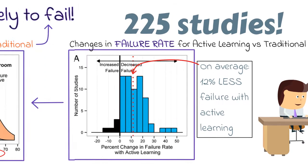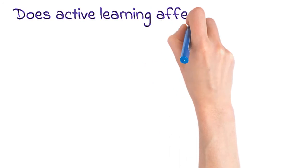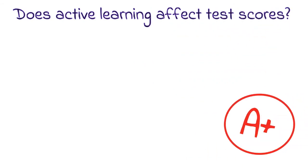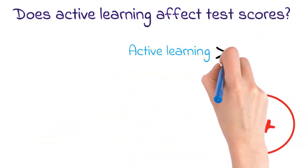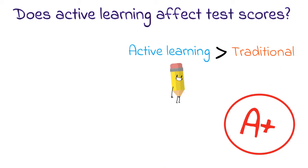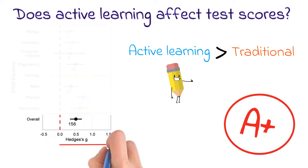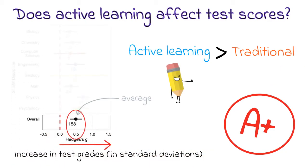They also reassessed the data to summarize the difference for test grades, usually final exams. Again, they found that the students who did active learning had a significant advantage. On average, test scores increased by half a standard deviation, and they observed this enhancement in all of the different disciplines they tested.